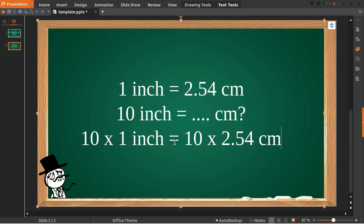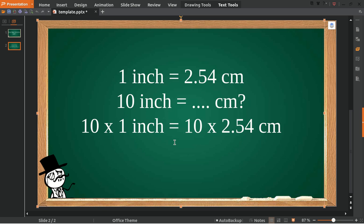So 10 multiplied by 1 is 10 inches, and that equals 10 times 2.54, which is 25.4 centimeters. Well, that's it! That's the answer to the question.